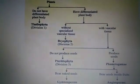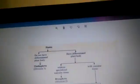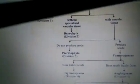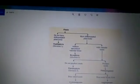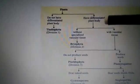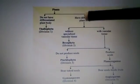Now again look at this flowchart to understand the points that you have to write for Pteridophyta. So in Pteridophyta, the first point you have to write is that the plant body is differentiated into root, stem and leaves.